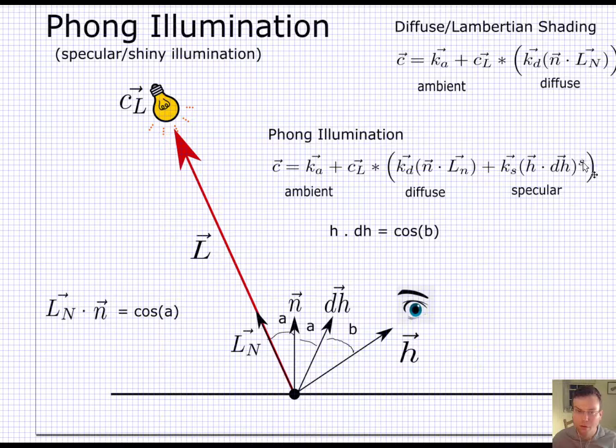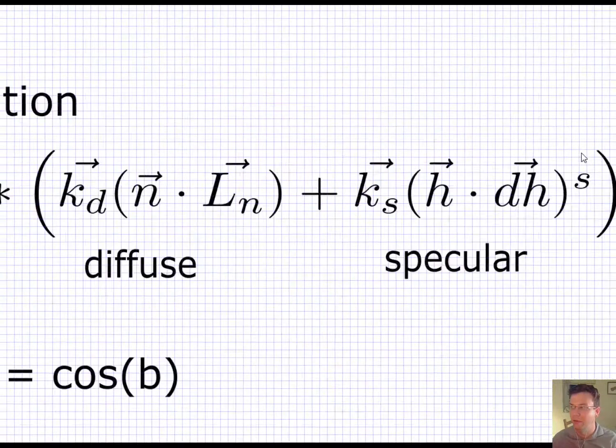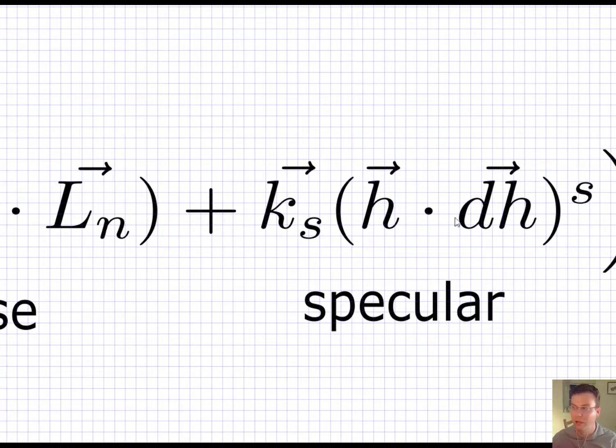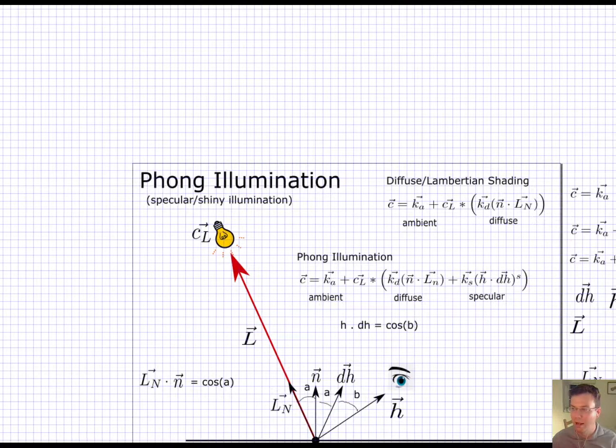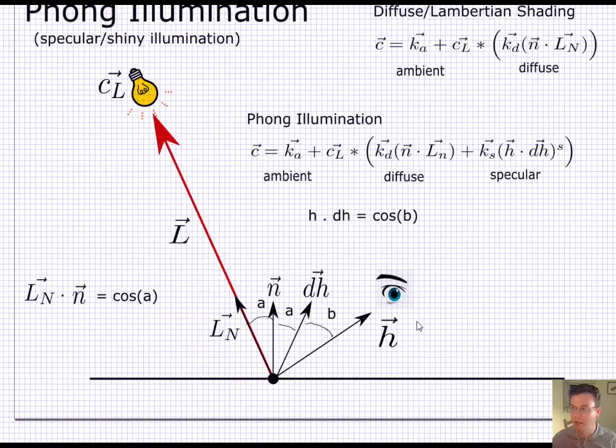But you notice there's a little sneaky term here, this s. So there's this little exponent that you can put after the dot product, and that is to make it even shinier.